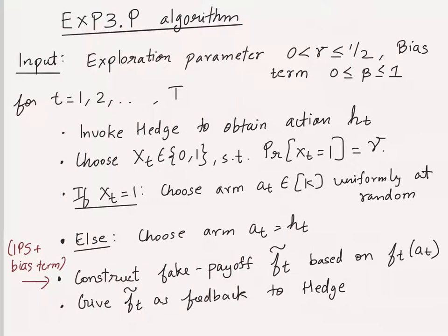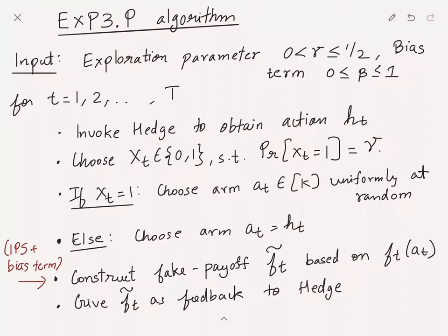The procedure remains as before. In EXP3.P it additionally takes this bias term between 0 and 1 as input. As before we invoke Hedge to obtain an action ht, then we flip a coin xt with probability gamma to see whether we need to do uniform exploration or not. With probability gamma we do uniform exploration, with probability 1 minus gamma we just choose the action given by h.